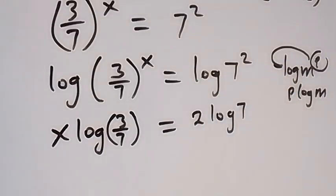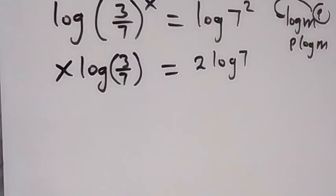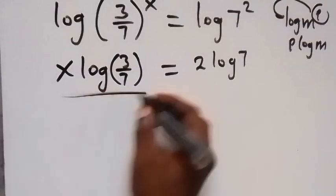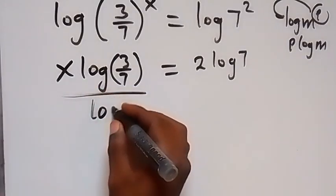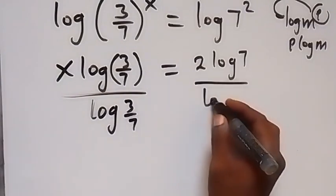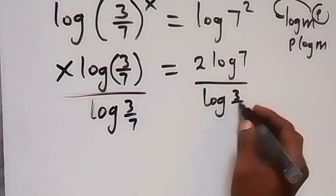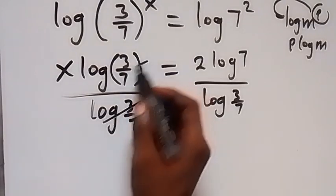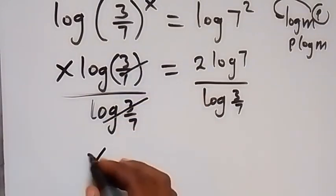We are interested in finding the value of x, so we can divide both sides by log 3 over 7. Log 3 over 7 cancels out here, and we have x equals 2 log 7 divided by log 3 over 7.